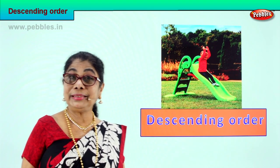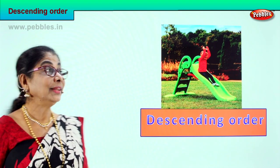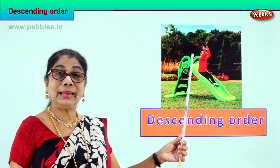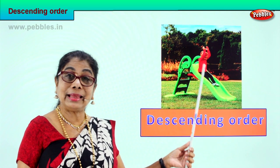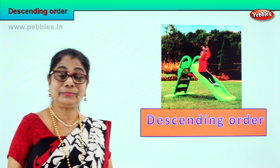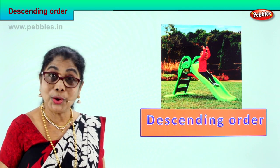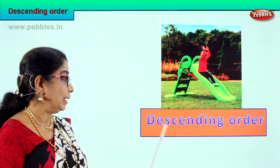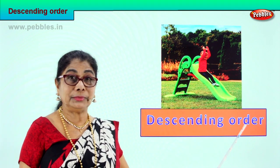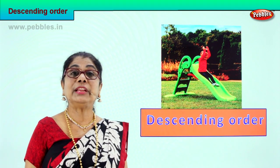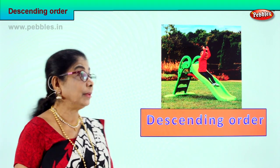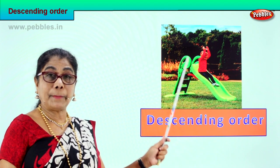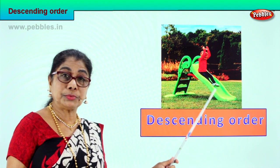Hi children, look — the little girl is sliding down. We are going to learn something different: descending order. What is the meaning of descent? Coming down from big number to small, smaller.